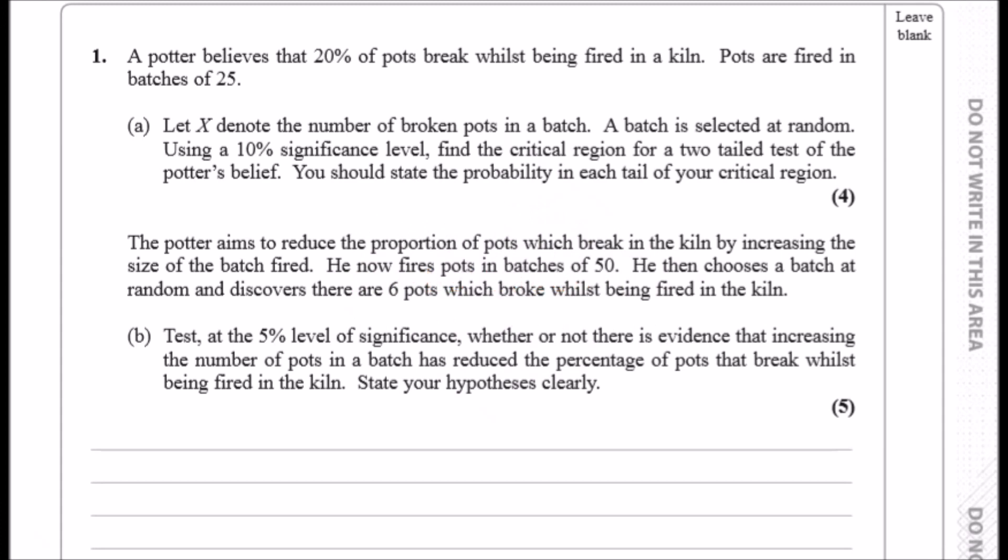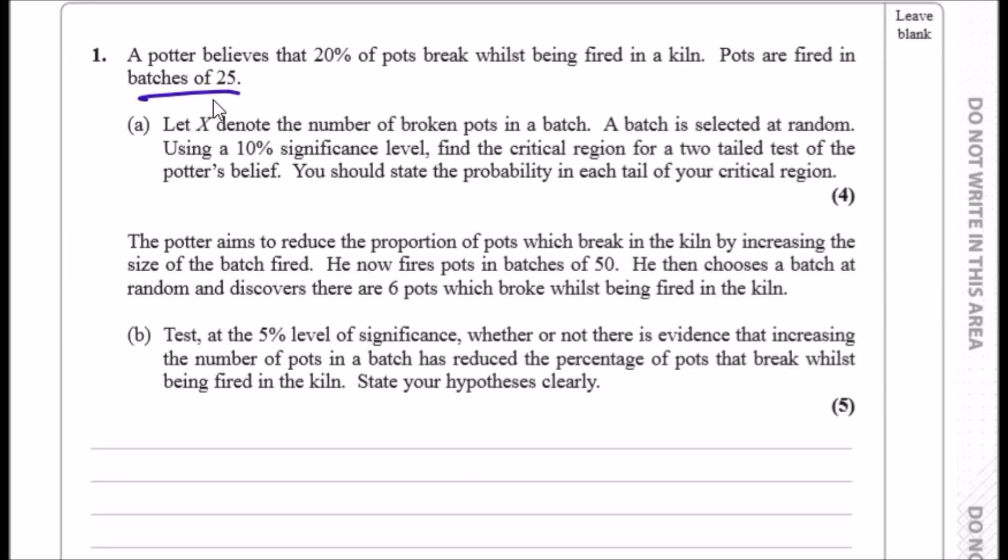Okay guys, here we go. The very first question. A potter believes that 20% of pots break whilst being fired in a kiln. Pots are fired in batches of 25. Part (a): Let X denote the number of broken pots in a batch. From the statement we can assume this is a binomial distribution because we're given the number of batches, which is 25, and we're given a probability of pots breaking, an actual p-value which is 20%. So instantly state that n is 25 and the probability is 0.20.